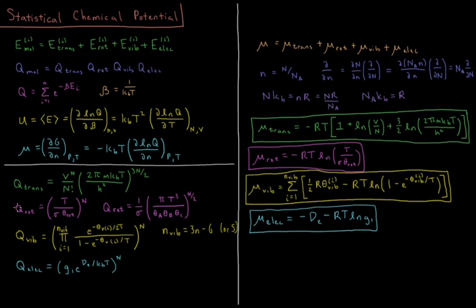For rotations, if your temperature is sufficiently above the rotational temperature, the partition function was (T over sigma times theta_rot) to the N, where sigma is the symmetry number — 1 for heteronuclear diatomics and 2 for homonuclear diatomics — and theta_rot is the rotational temperature, which you can look up in tables. For a nonlinear polyatomic, you have three different rotational temperatures: theta_a, theta_b, and theta_c. The sigma should also be taken to the N.